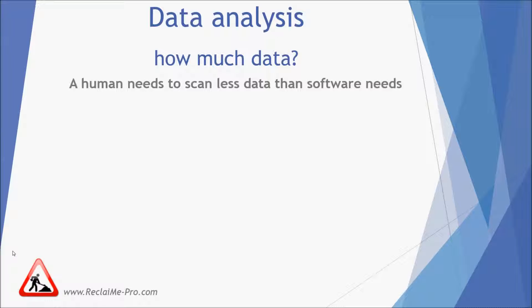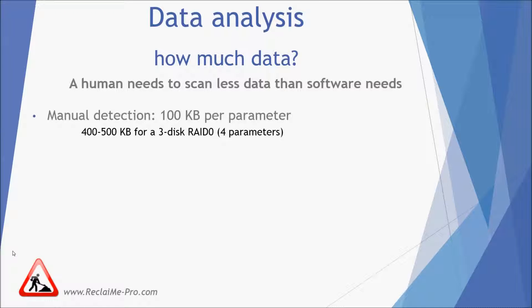Now let's talk about the minimum amount of data required to detect the parameters. In case of manual detection, you need several files larger than the block size and a total size larger than 2 or 3 full stripes. This corresponds to about 100 KB of data per parameter. For example, in case of 3-disk RAID 0, you need 4 parameters – block size and 3 disk locations in the disk order. Generally, for such an array, a human needs to analyze about 500 KB of data.